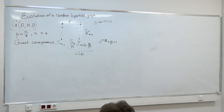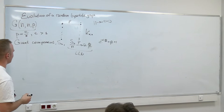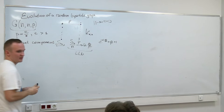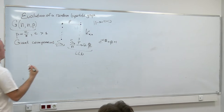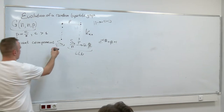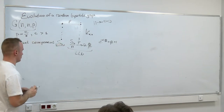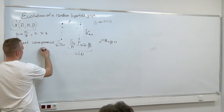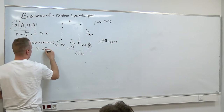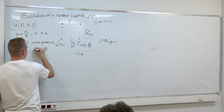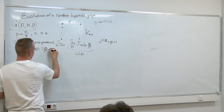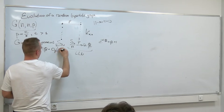The giant component is the largest connected component of the graph. It is linear in N — its size equals approximately 2N times beta. More precisely, the size is 2N times beta plus some smaller order term from N.